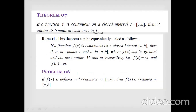The next theorem states: if a function f is continuous on the closed interval [a, b], then it attains its bounds. That is, the function attains its supremum and infimum — its greatest lower bound and least upper bound — within that interval.